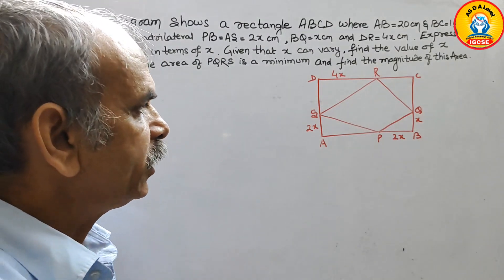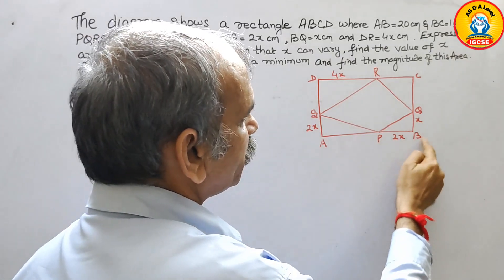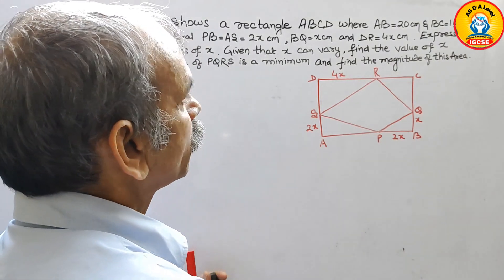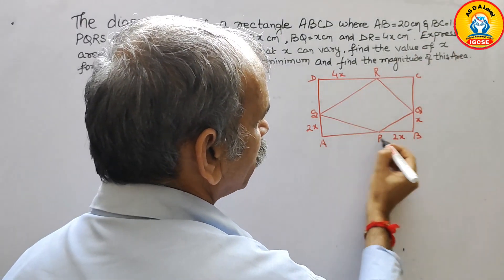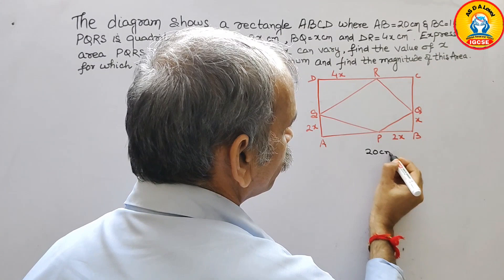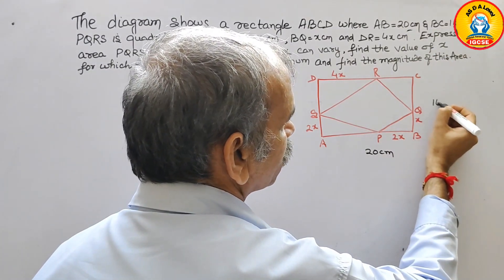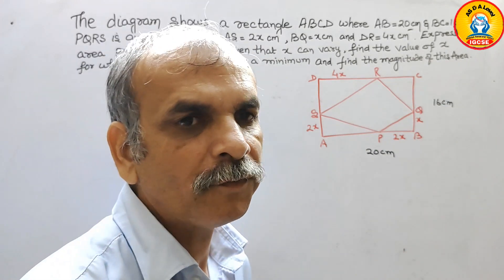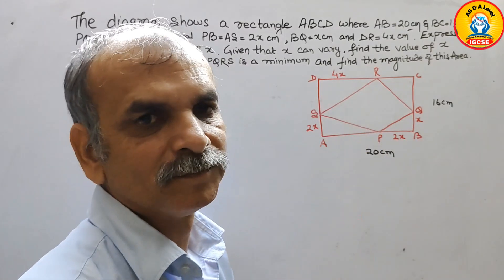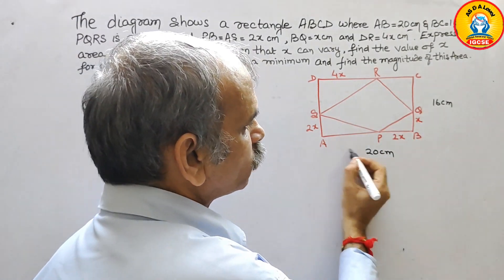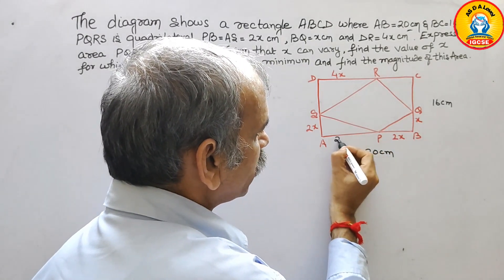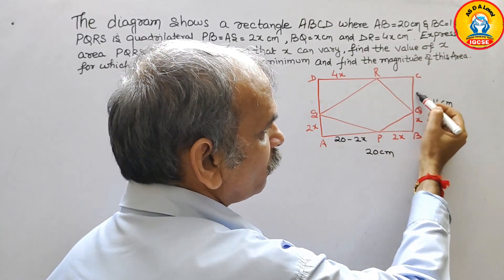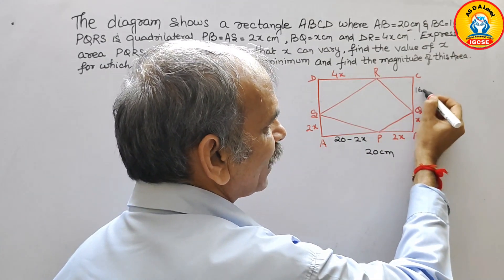So here, ABCD is a rectangle. AB is 20 cm, meaning from A to B it is 20 cm, and BC is 16 cm. From these dimensions we will find all the coordinates of each triangle. AS is 2x, so the remaining side AS to B is 20 minus 2x. Since BC is 16 and BQ is x, the remaining part QC is 16 minus x.